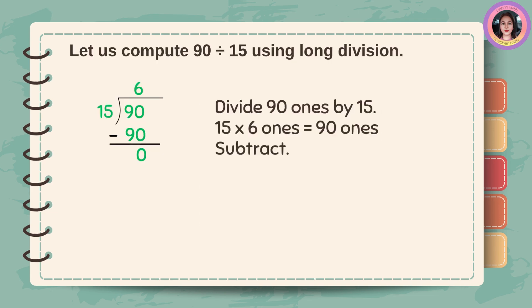Let's compute 90 divided by 15 using long division. Divide 90 ones by 15. 15 times 6 ones is 90 ones. And then subtract 90 minus 90 is 0.